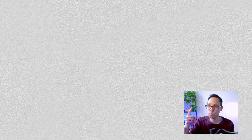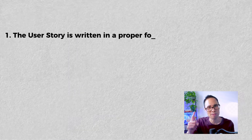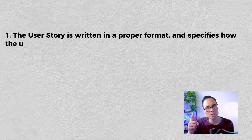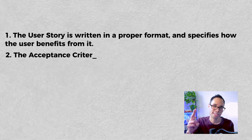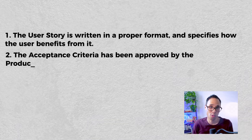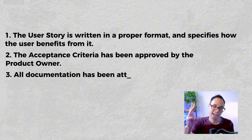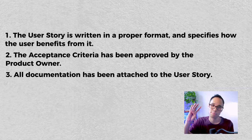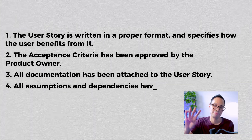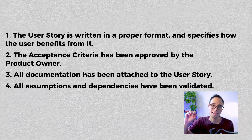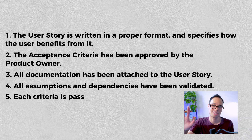Here's one example. Number one, the user story is written in a proper format and specifies how the user benefits from it. Number two, the acceptance criteria has been approved by the product owner. Number three, all documentation has been attached to the user story. Number four, all assumptions and dependencies have been validated. And number five, each criteria is pass or fail.